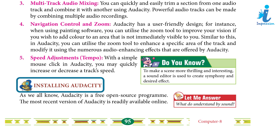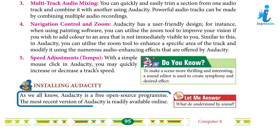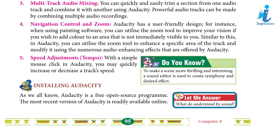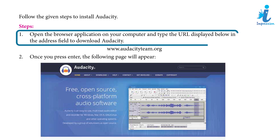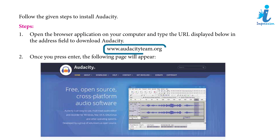6. Installing Audacity: As we all know, Audacity is a free open source program. The most recent version of Audacity is readily available online. Follow the given steps to install Audacity. Step 1: Open the browser application on your computer and type the URL in the address field to download Audacity: www.audacityteam.org.